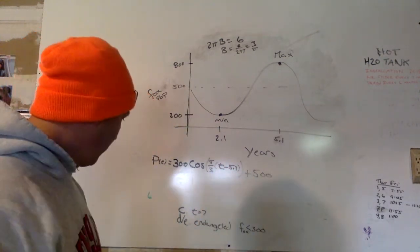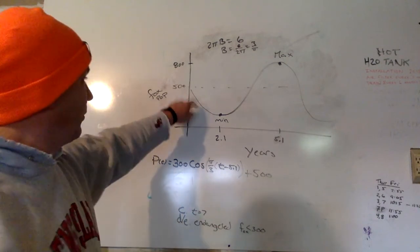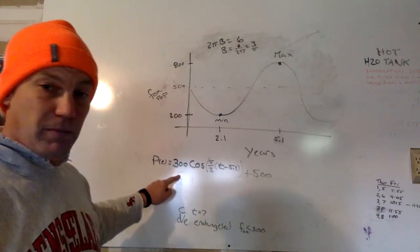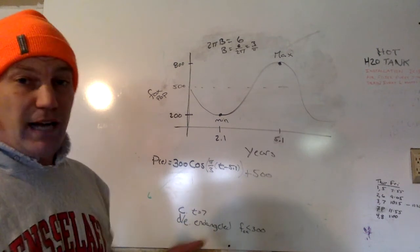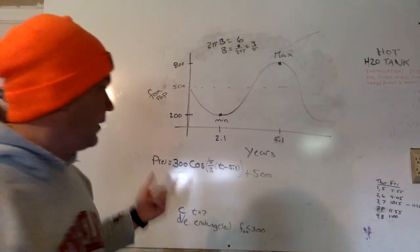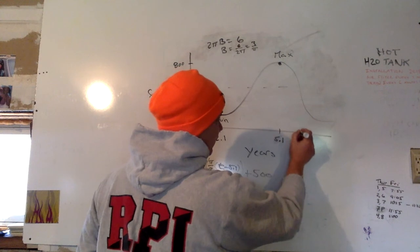Okay, so part c, part a was sketch it, part b was come up with the equation. Part c just says, how many foxes were there at t equals 7? Well, t equals 7 is out here somewhere.